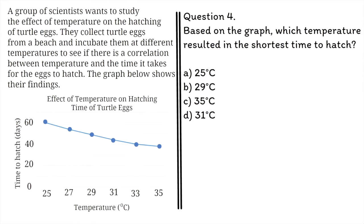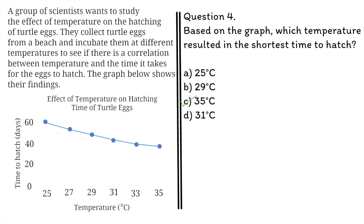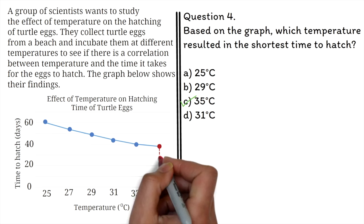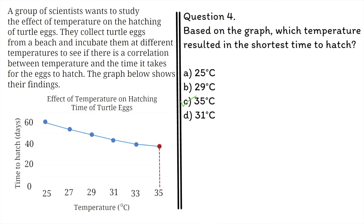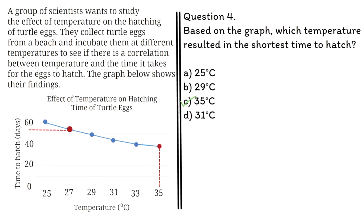Question 4: Based on the graph, which temperature resulted in the shortest time to hatch? A. 25 degrees Celsius, B. 29 degrees Celsius, C. 35 degrees Celsius, D. 31 degrees Celsius. The correct answer is C, 35 degrees. The work here is to locate the point with the shortest time, then look for the temperature that corresponds to it — that temperature is 35 degrees. Please note that it's not always possible to get exact values on a graph; you need to make your best guess. For a point like this, we can estimate it to be 53 days — it's above 50 and below 60.